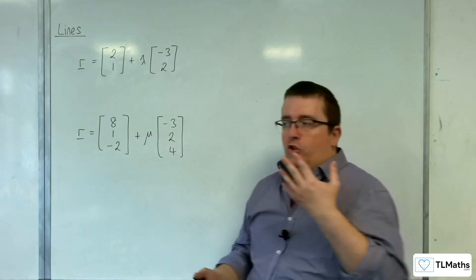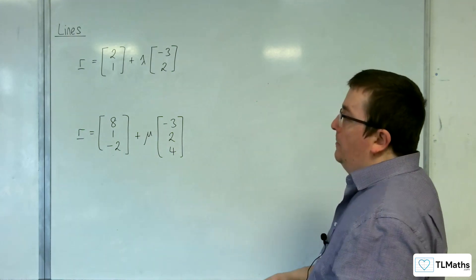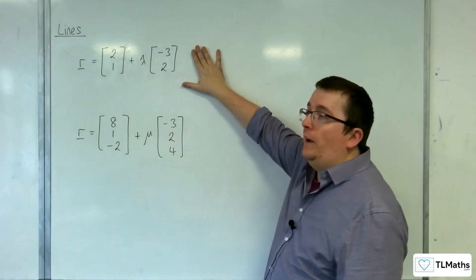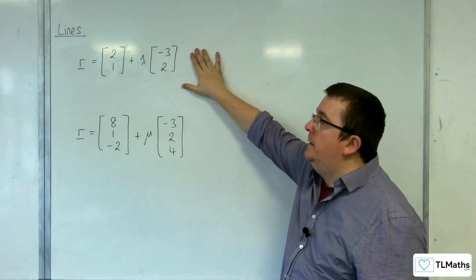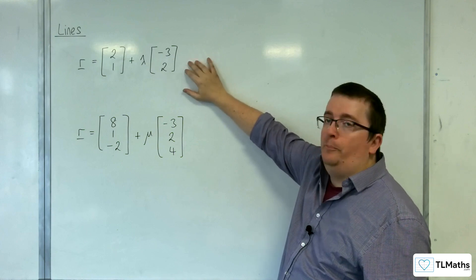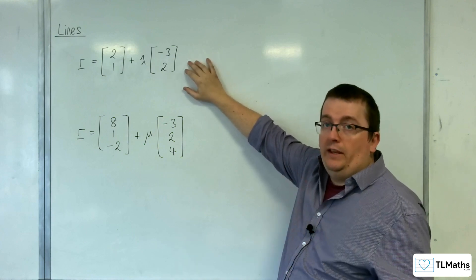But the first thing that we should probably do is think about going back to 2D. And here is a vector equation of a line in 2D. Can we convert this back into Cartesian form?